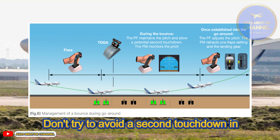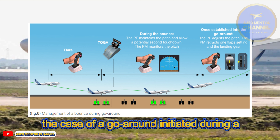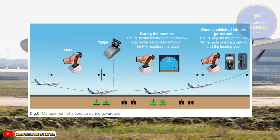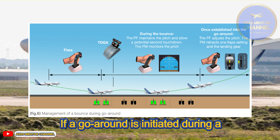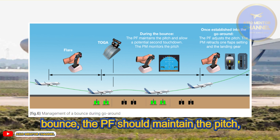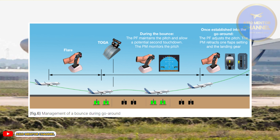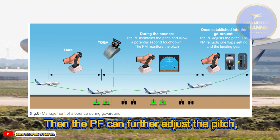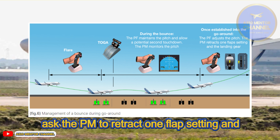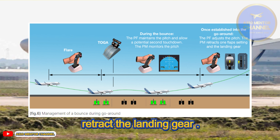Don't try to avoid a second touchdown in the case of a go-around initiated during a bounce. If a go-around is initiated during a bounce, the PF should maintain the pitch, allowing a second touchdown to happen. The PF can then further adjust the pitch, ask the PM to retract one flap setting, and retract the landing gear.